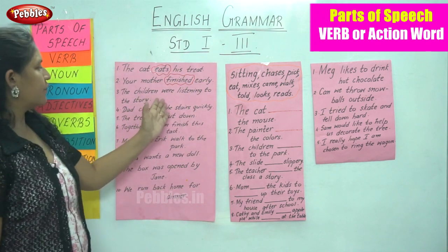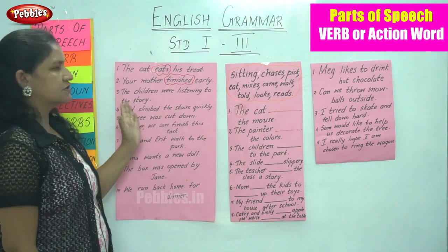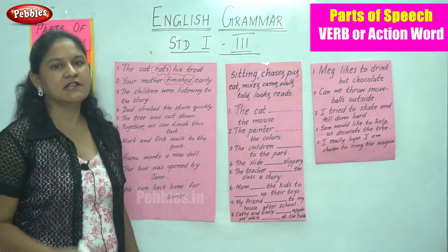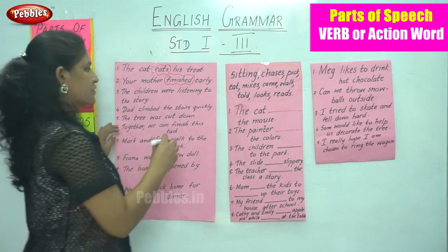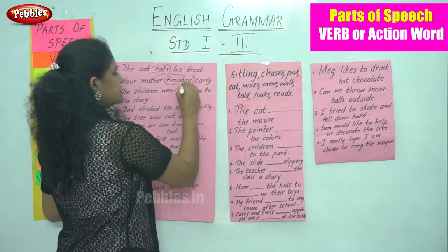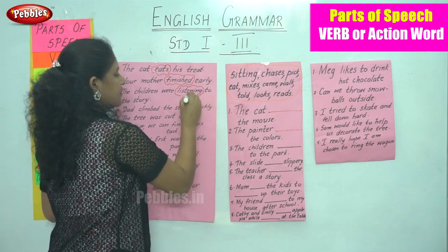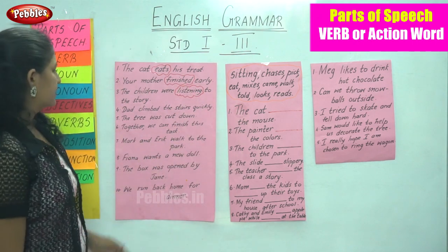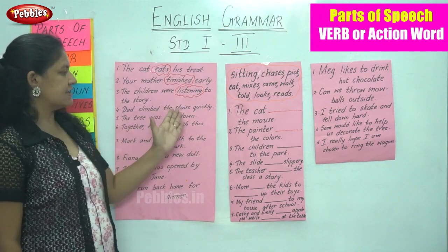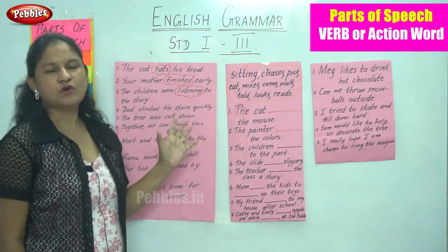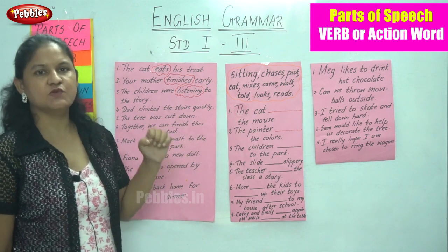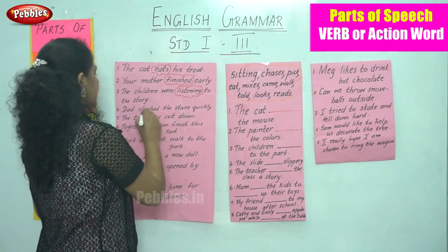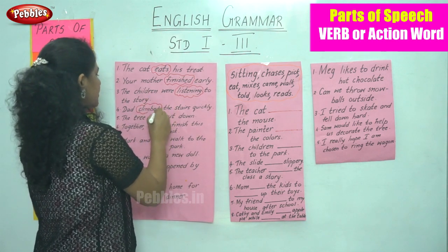'The children were listening to the story.' What were the children doing? They were listening to the story — somebody was narrating a story to them. Next: 'Dad climbed the stairs quickly.' What was the action done by dad? He was climbing the stairs, so the word climbed becomes the action word.